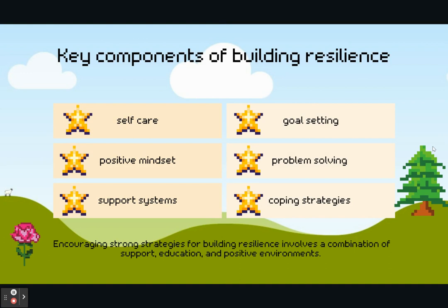Looking at the key components of resilience, we're going to cover some of these areas to help build resilience. This list is not exhaustive — there are lots of things — but we're going to focus on these six tonight: self-care, goal setting, positive mindset, problem solving, support systems, and coping strategies. Encouraging strong support strategies involves a combination of support, education, and positive environments. As Plato once said, it takes a village to raise a child.